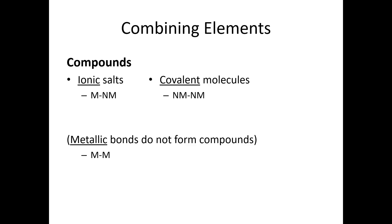Whenever we have a non-metal bonding to another non-metal, that is a covalent bond, and whenever we have a covalent bond, that's making a molecule. There are some exceptions, but for the most part, covalent bonds create molecules. There are also metallic bonds. Metallic bonds do not form compounds — they create mixtures of metals. Ionic bonds, covalent bonds, and metallic bonds will all have different properties that we'll learn about later.